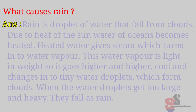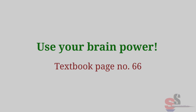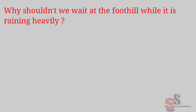Can you tell? Textbook page 66: What causes rain? Answer: Rain is droplets of water that fall from clouds. Due to the heat of the sun, water in oceans becomes heated and gives steam, which turns into water vapor. This water vapor is light and rises higher, cools, and changes into tiny water droplets which form clouds. When the water droplets get too large and heavy, they fall as rain.